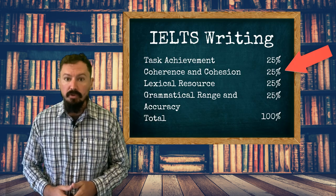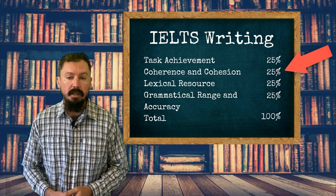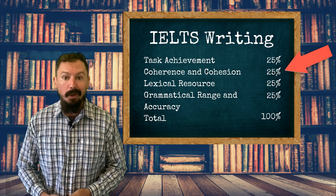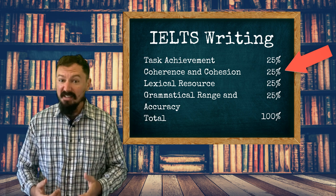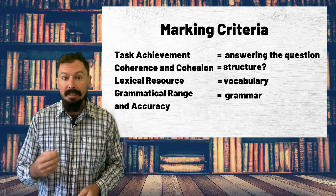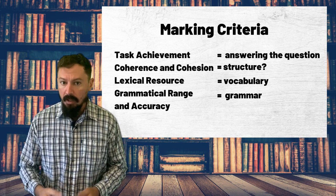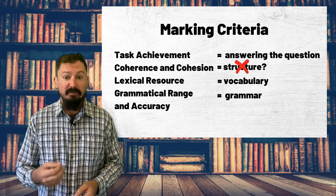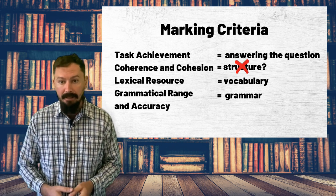Whether you take the IELTS academic or general test, in both task one and task two of the writing exam, twenty-five percent of your score will come from something called coherence and cohesion. This is the same value as vocabulary, grammar, and answering the question properly, so obviously it is very important. But what does it mean? Generally speaking, coherence and cohesion means how well your ideas are linked together. Most people think of it as structure, but this is a little too limited and it is in fact a bigger and more complicated idea than that.